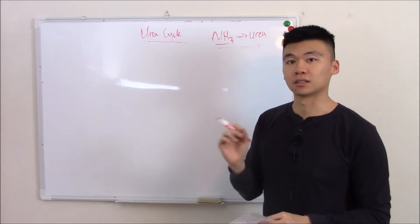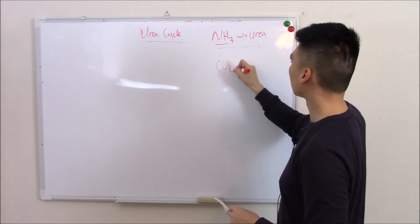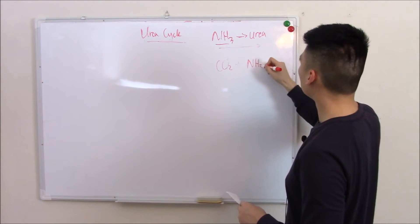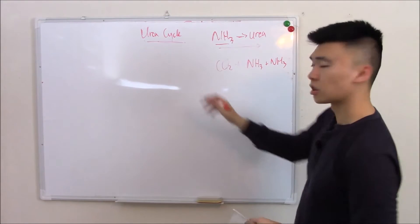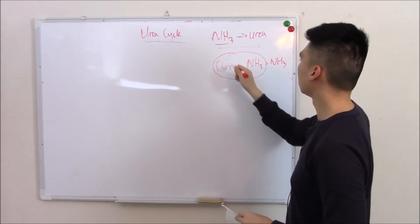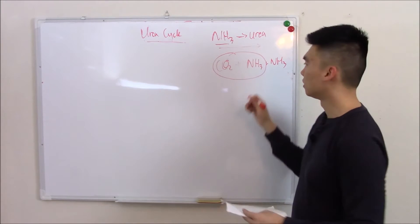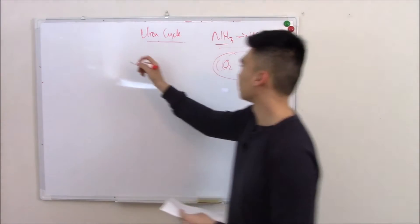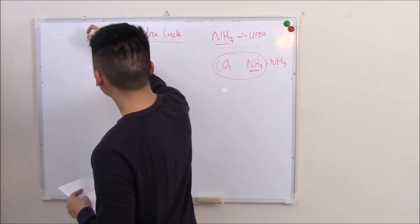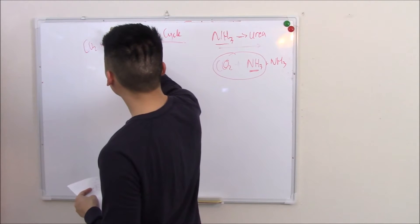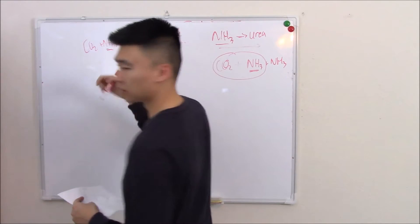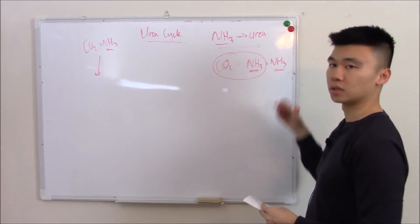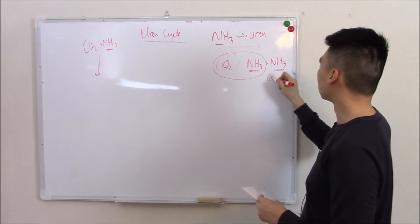Before we get into the urea cycle, you should know what urea looks like chemically. Urea is just carbon dioxide and two ammonias. The urea cycle starts with these two: carbon dioxide we have plenty of, and then the first ammonia comes from whatever amino acid you're breaking down. So we start with this carbon dioxide and whatever amino acid we're breaking down, the ammonia from that. How do we get that second ammonia to make urea? Well, that comes from aspartate, midway in the cycle.